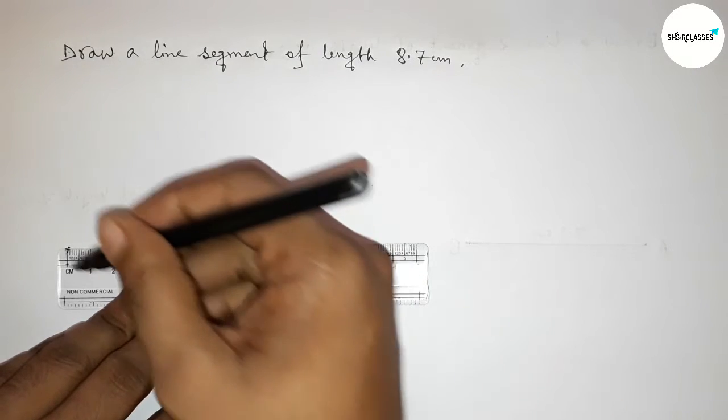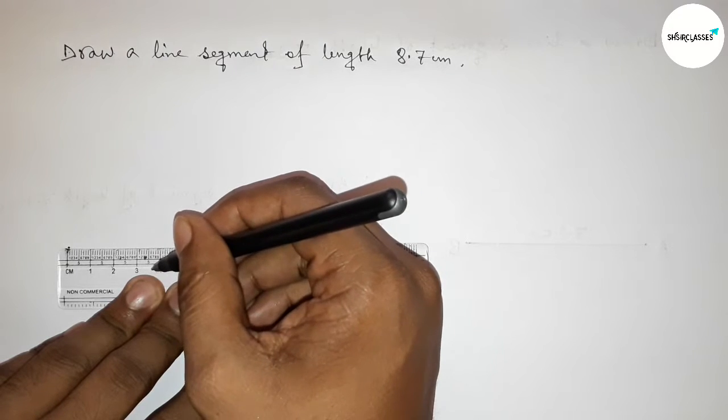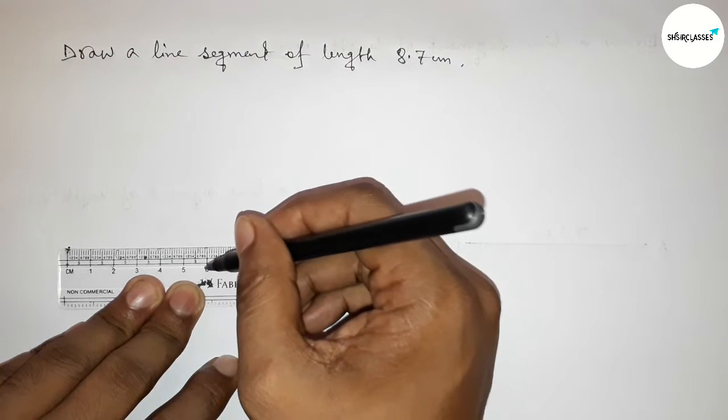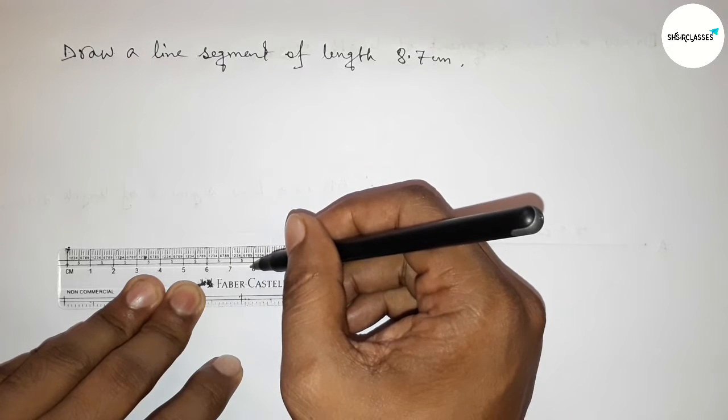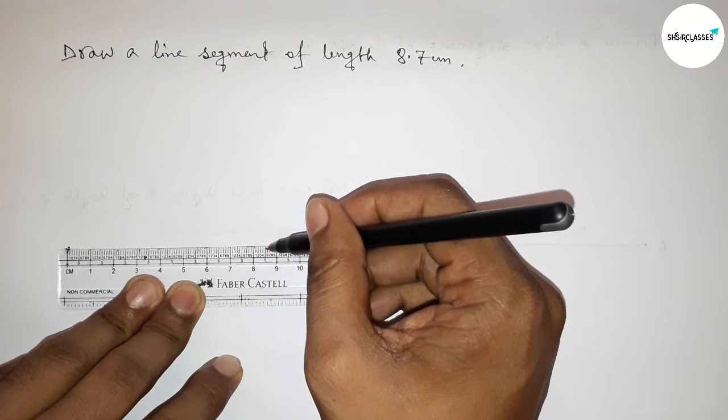Then counting, so this is zero, one, two, three, four, five, six, seven, eight. This is eight point five, six, seven. So this is eight point seven centimeter length.